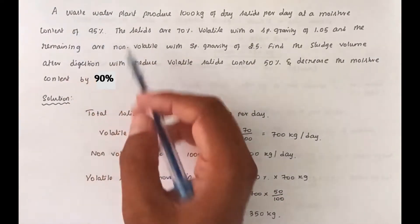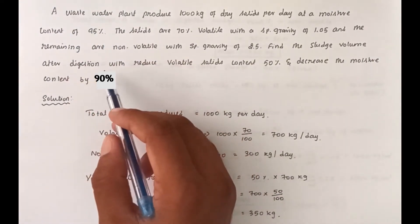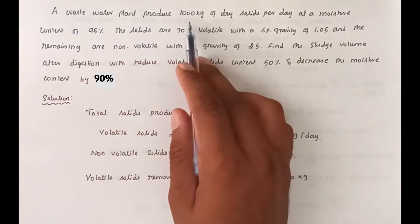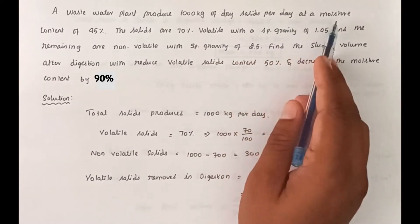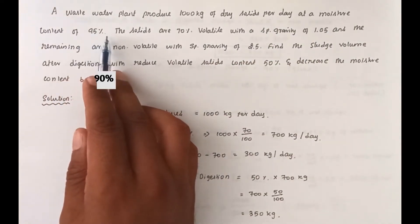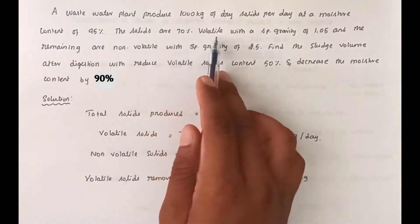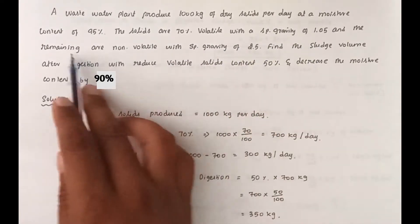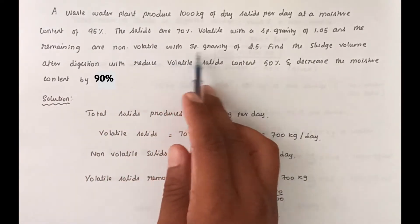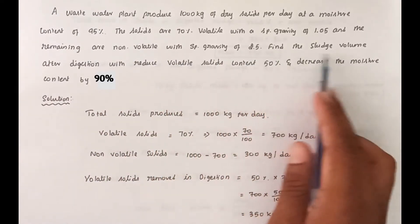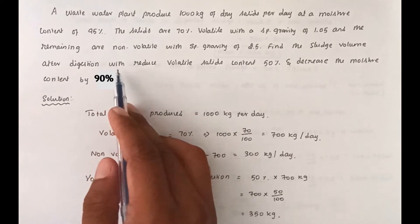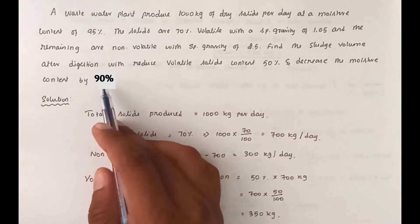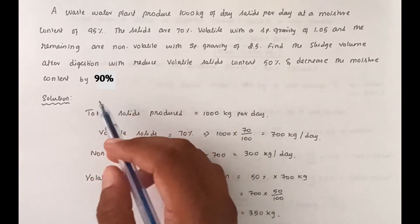Hello friends, today we are going to see the problem related to finding the sludge volume. The problem is: a wastewater plant produces 1000 kg of dry solids per day at a moisture content of 95%. The solids are 70% volatile with a specific gravity of 1.05 and the remaining are non-volatile with a specific gravity of 2.5. Find the sludge volume after digestion with reduced volatile solids content of 50% and a decrease in moisture content by 50%.